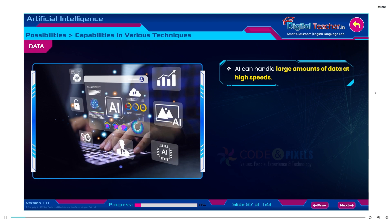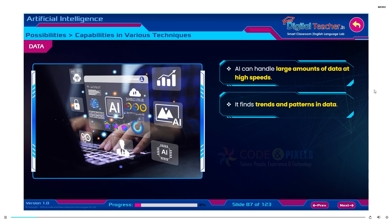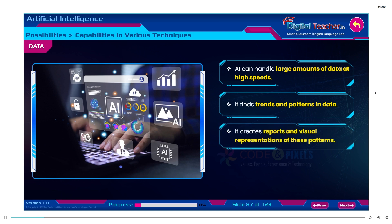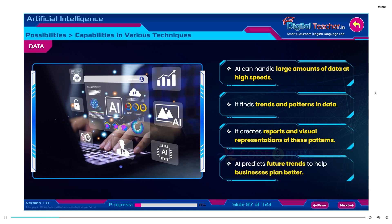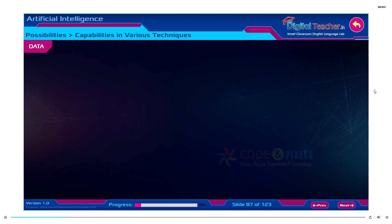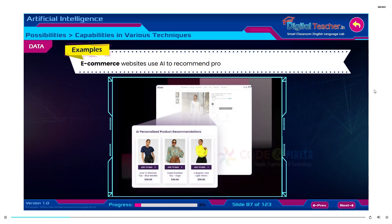AI can handle large amounts of data at high speeds. It finds trends and patterns in data and creates reports and visual representations of these patterns. AI predicts future trends to help businesses plan better. Example: e-commerce websites use AI to recommend products based on your previous purchases.